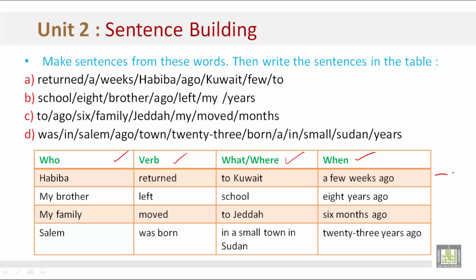Example B: 'My brother left school eight years ago.' Example C: 'My family moved to Jeddah six months ago.' Example D: 'Salem was born in a small town in Sudan 23 years ago.' Notice that the chart begins with 'who' — such as Habiba, my brother, my family, Salem.